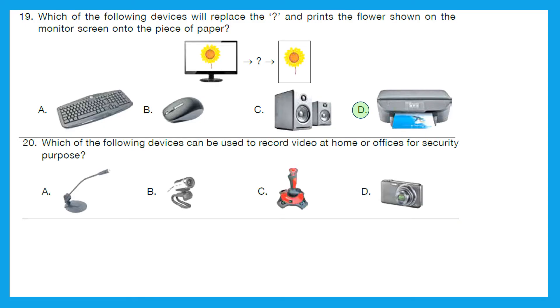Question 20: Which of the following devices can be used to record video at home or offices for security purpose? So here we are talking about CCTV camera because those are the ones which are installed for security purposes. Which one of these is a CCTV camera? And the right answer is option B.